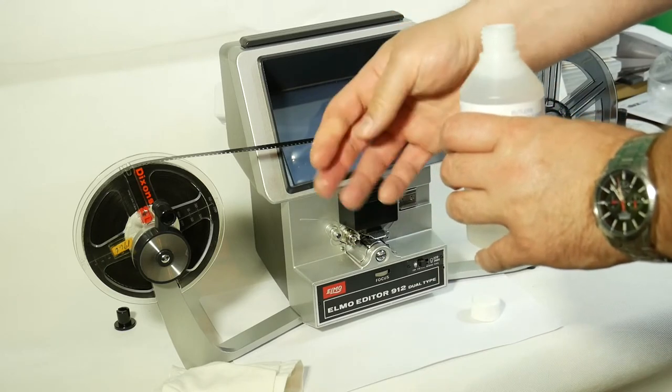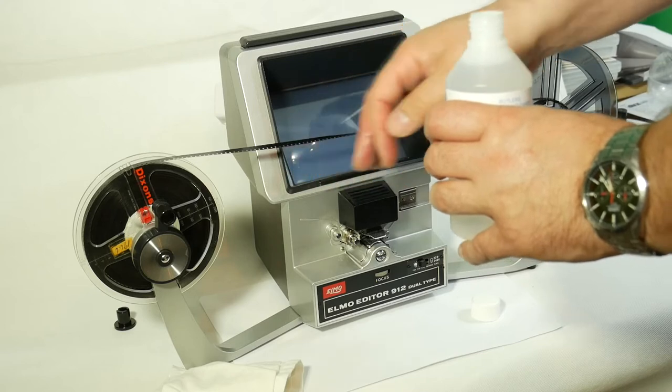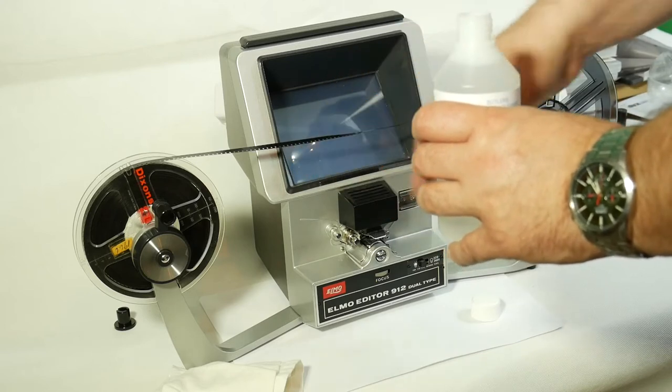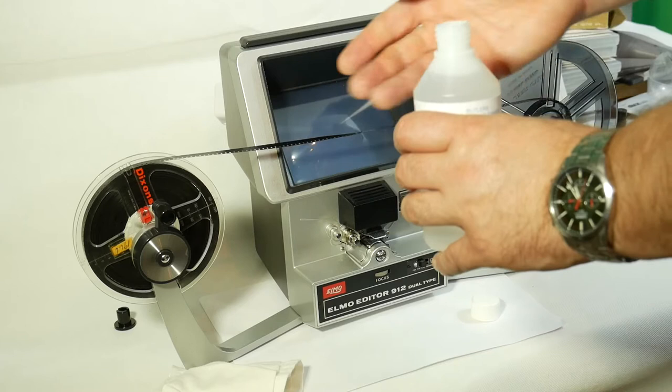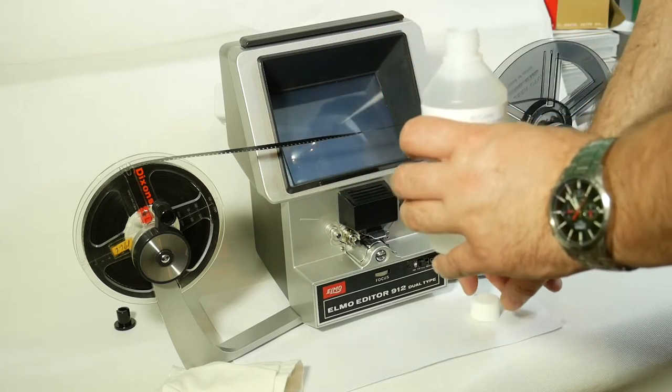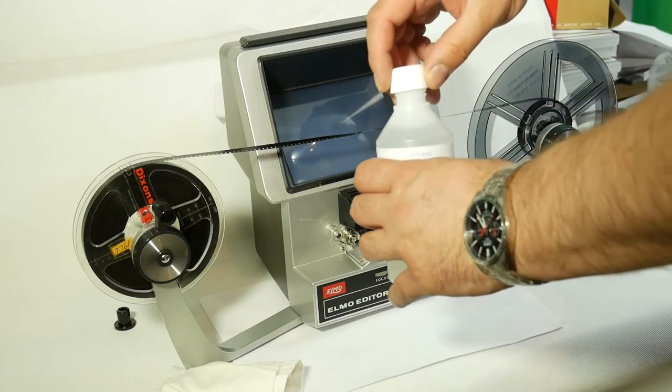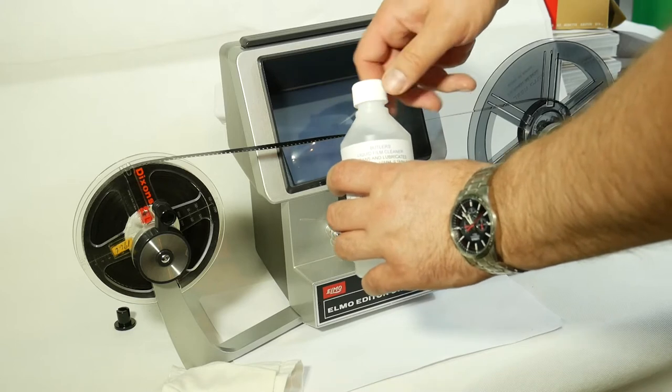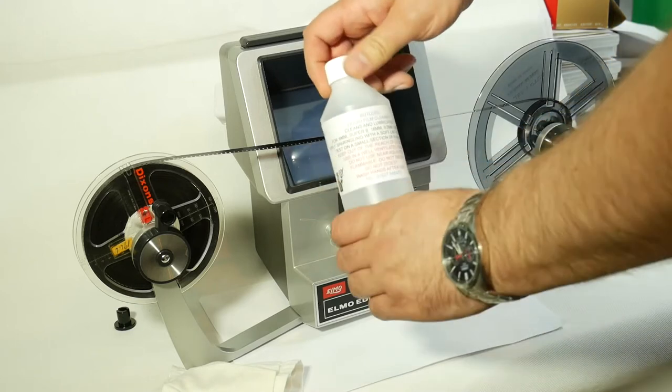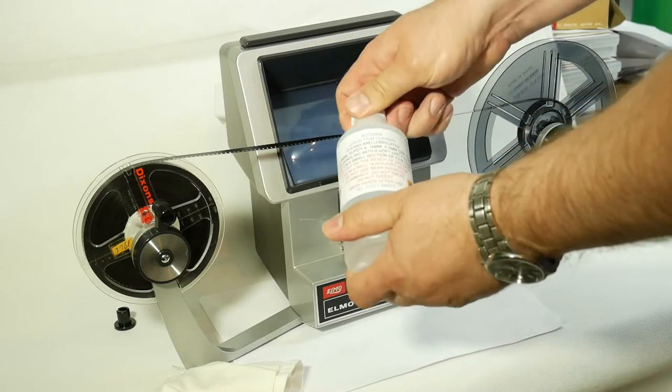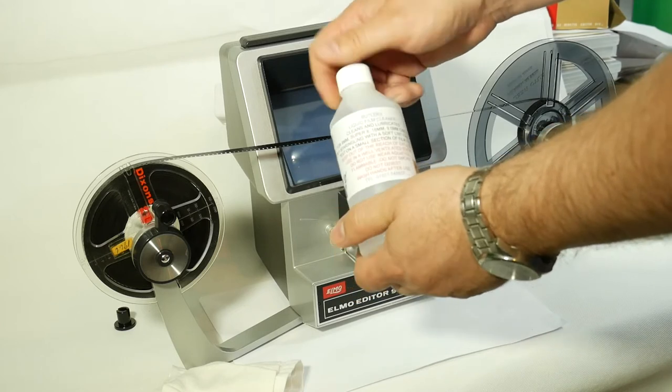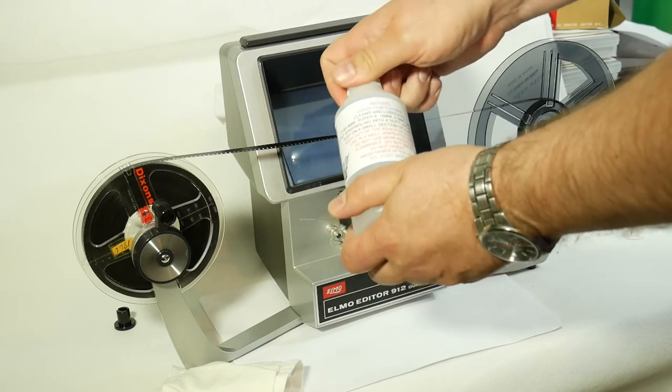It dries instantly on the film, more or less as soon as you start to apply it, before it reaches the take-up spool when you're cleaning. I'll show in a moment. It does evaporate so it cleans the film and doesn't leave the film wet. A lot of cleaners leave the film wet which I don't think is a good thing, but this does evaporate from the film so it doesn't leave it wet on the spool.